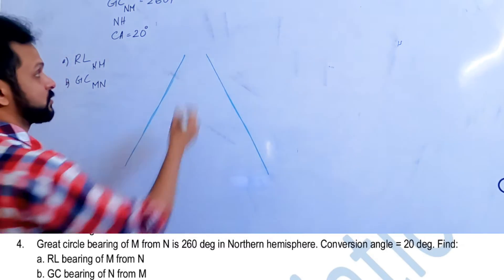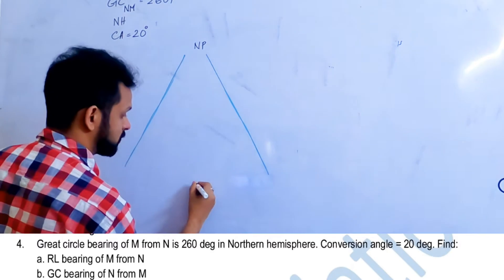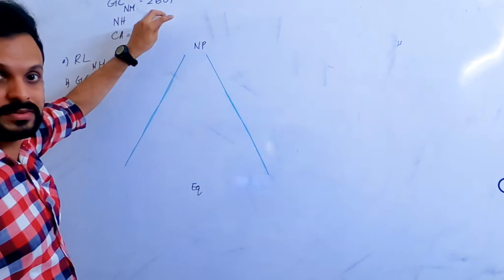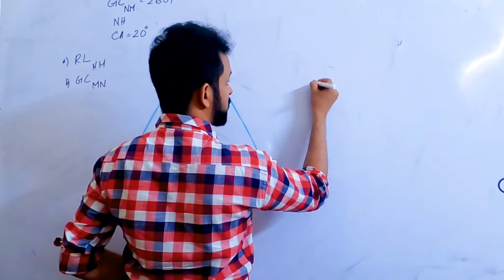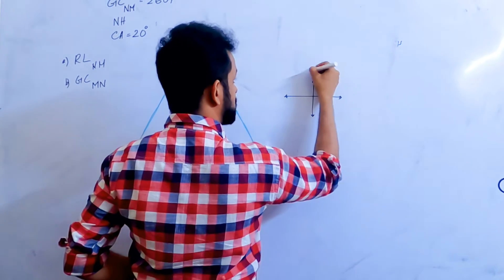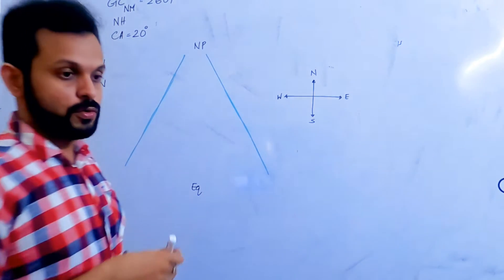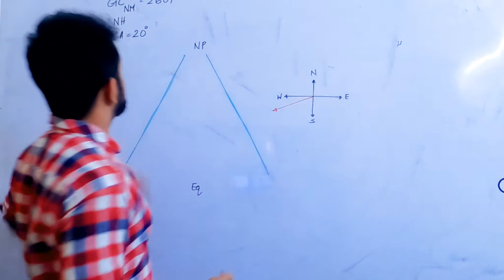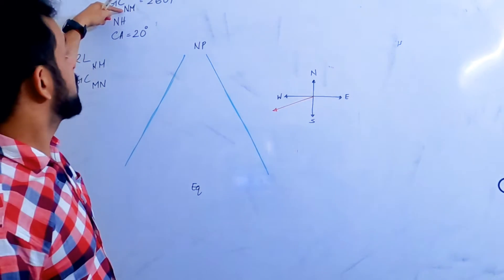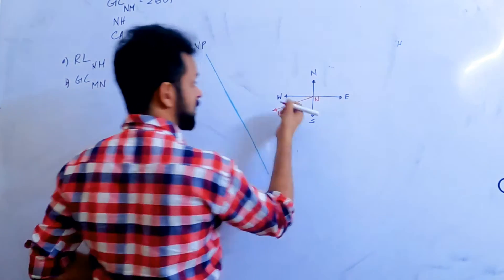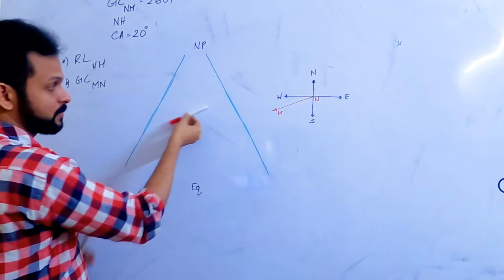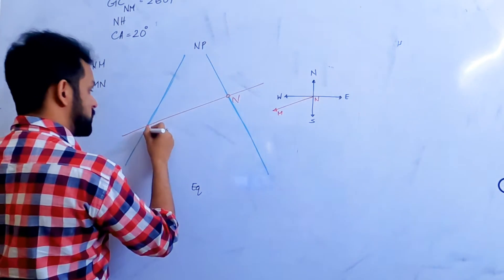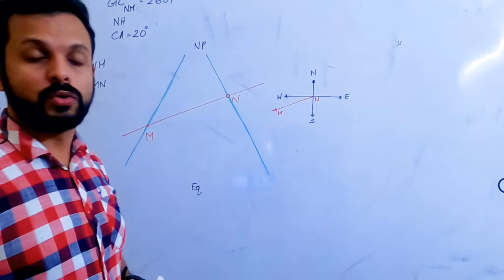Northern hemisphere, and therefore this is the required orientation — this is the north pole and this is the equator. To mark points N and M, we use the bearing angle and orient based on a true direction system. Drawing the reference north, south, east, and west: a track of 260 degrees — since 270 is due west, 260 is just south of that. That direction is from N, so N is here and M is somewhere along that line.